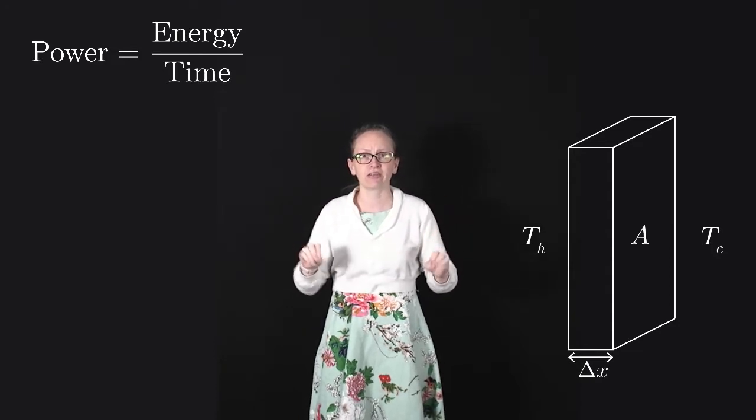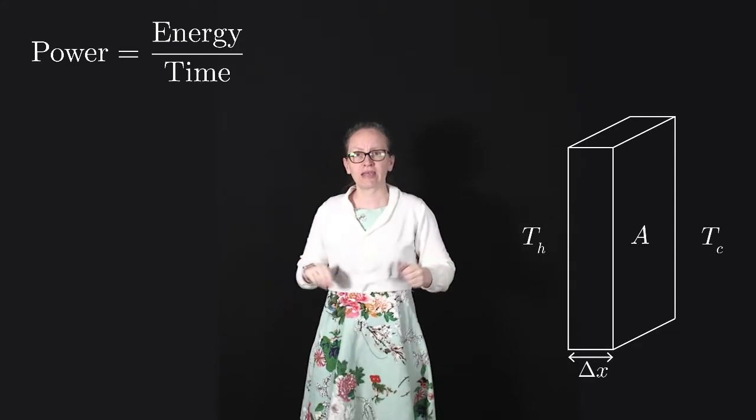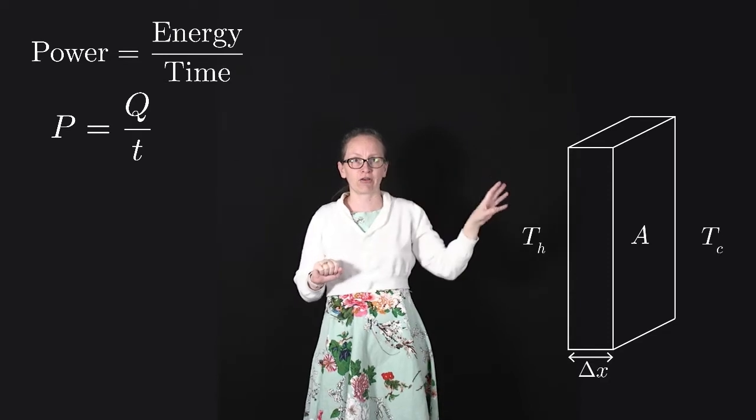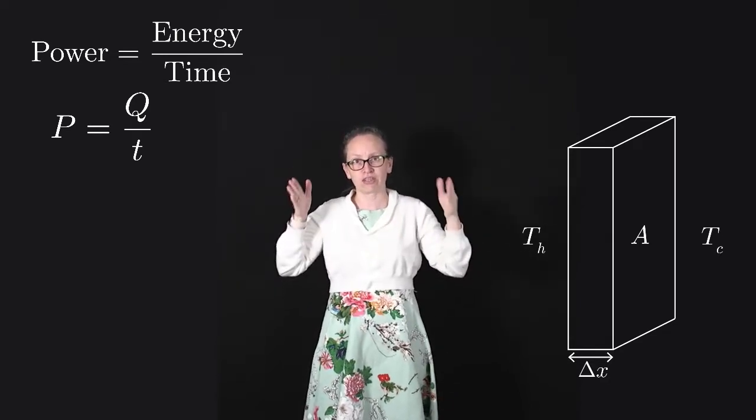So what we're trying to find out is the power through this block. We can write P is equal to Q over T, where Q is the heat flowing through the block and T is the time over which that heat flows.